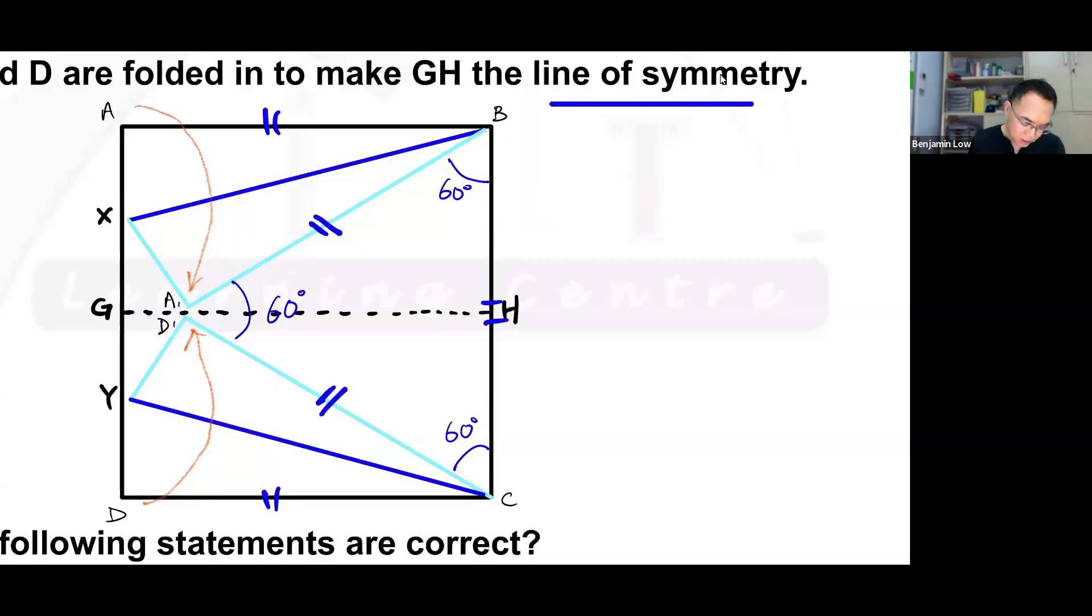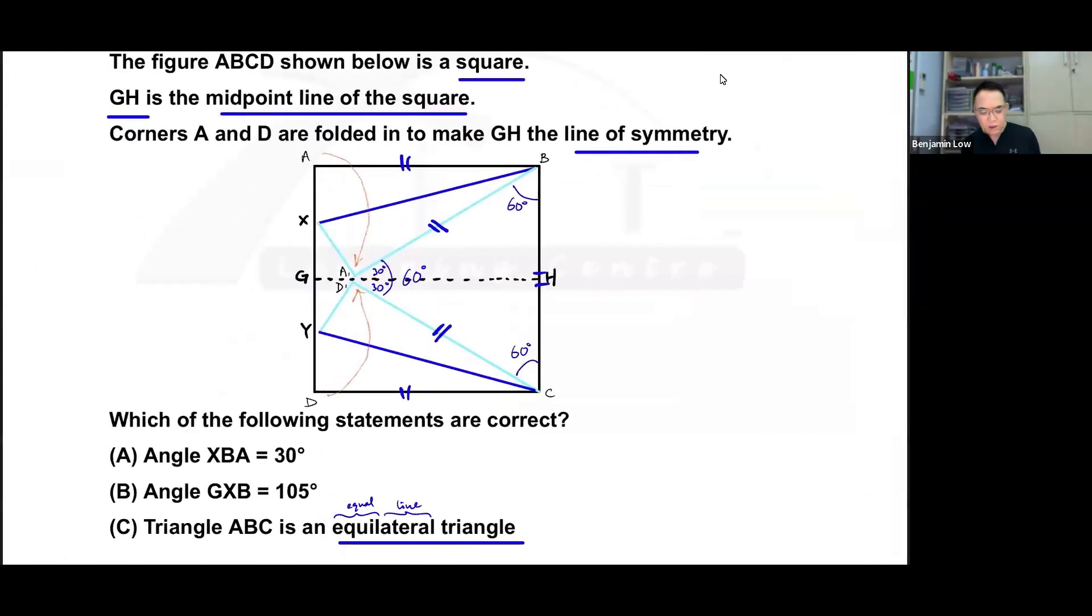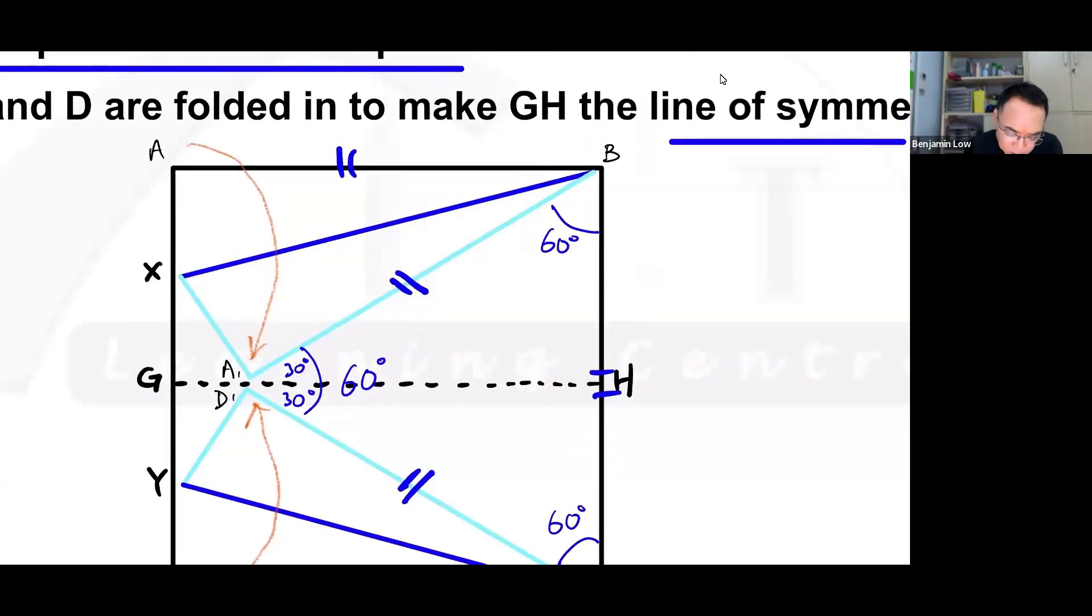And since this is a line of symmetry, it also means that this is 30 and this is 30. Alright, let's carry on. So the next thing I would like to remind you is that when you fold, when you fold a piece of paper like this, then what happens is that this angle and this angle, they become equal. And the bigger you fold, the bigger each of these angles become. So they always are equal to each other. And let's say, so okay, so then my question to you is how much is each of these angles? What do you think? Clue, this is the corner of a square.